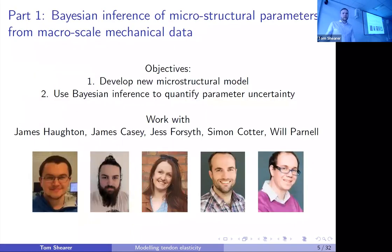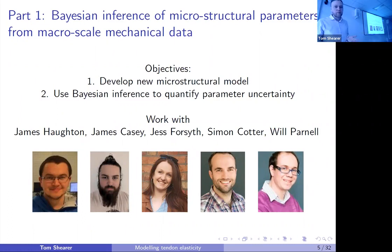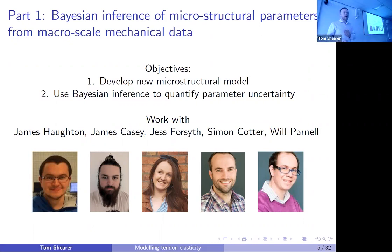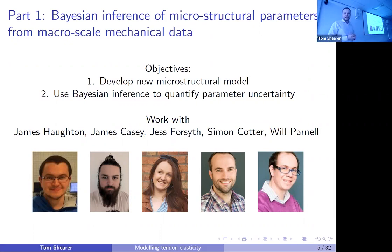One of the things I'm going to talk about in the first part of this talk is how we built a model — in collaboration with James Fortin, Simon Carter, and Will Parnell — in which we developed a new microstructural model to predict the mechanical behavior based on those parameters. We then used Bayesian inference in order to quantify the uncertainty in the parameter values. This work is now being taken on by James Casey and Jess Forsyth.